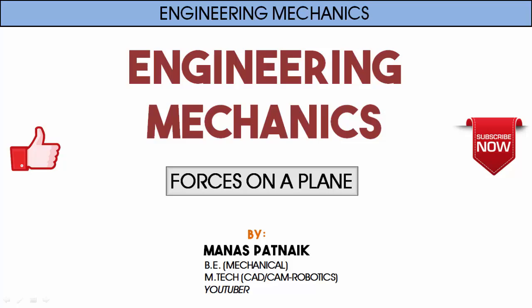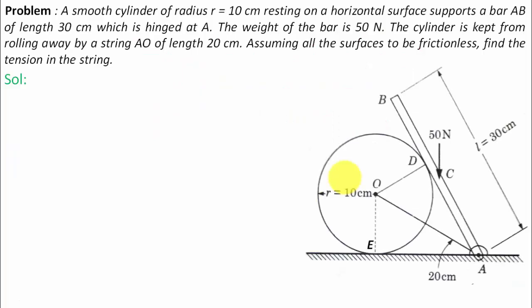Hi there guys, hope you're doing well. This is your friend and tutor Manus. A smooth cylinder of radius R equal to 10 centimeters resting on a horizontal surface supports a bar AB of length 30 centimeters which is hinged at A. The weight of the bar is 50 newtons. The cylinder is kept from rolling away by a string AO of length 20 centimeters.